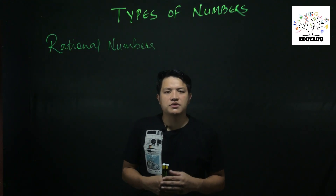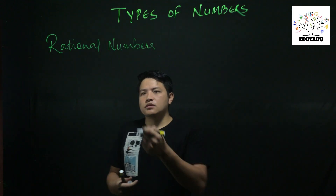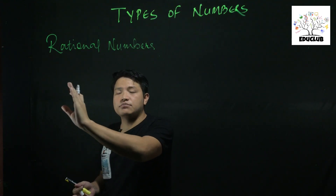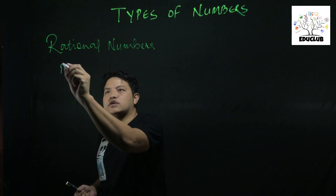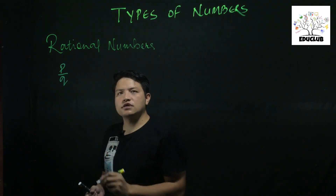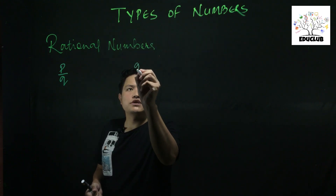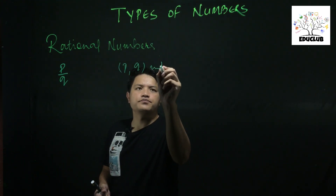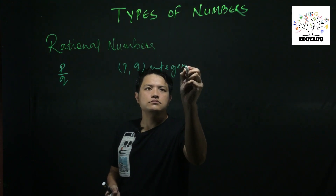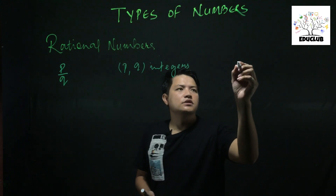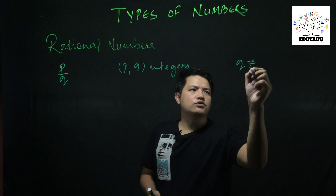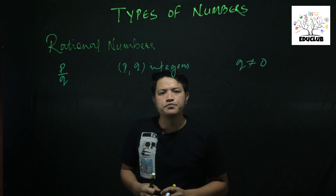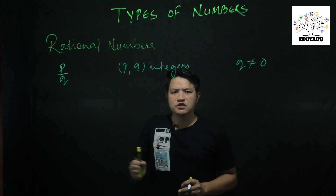The definition is: a number which can be expressed in the form of p by q, where p and q should be integers and q is not equal to zero. Both p and q must be integers, and the condition that q should not be equal to zero must be satisfied for rational numbers.